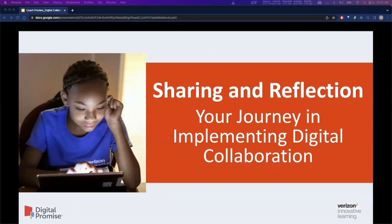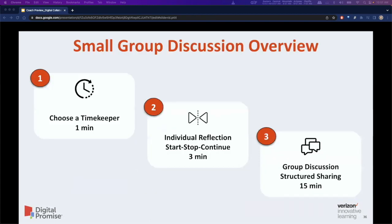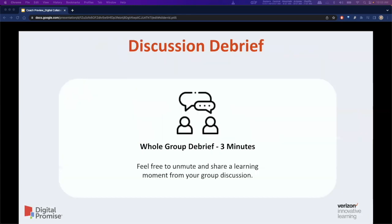As we begin to close out our session, we will transition into a small group discussion activity where we will start with a breakout room share out and then move on to a reflection using a thinking routine. With one-minute, three-minute, and 15-minute breakdowns to facilitate discussion about individual reflection and a structured group share, followed by a three-minute whole-group debrief.